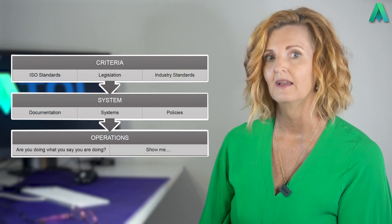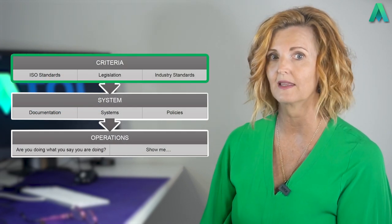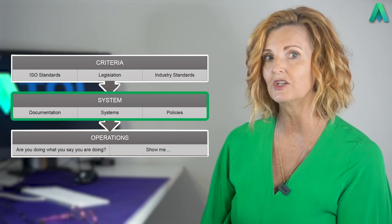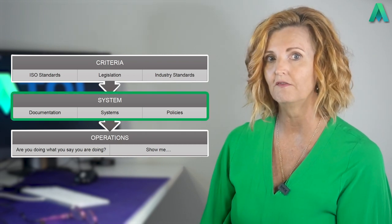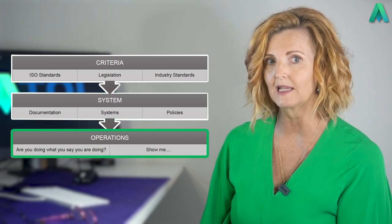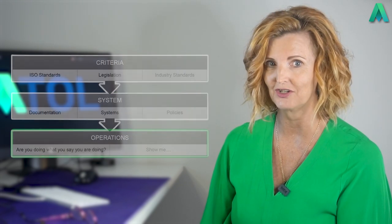Your planned audits should ensure that there are two criteria areas that you audit against, and will look something like this. The criteria level is ISO 14001, the system level is your own environmental management system, and the operations level is where you can see it all in action.